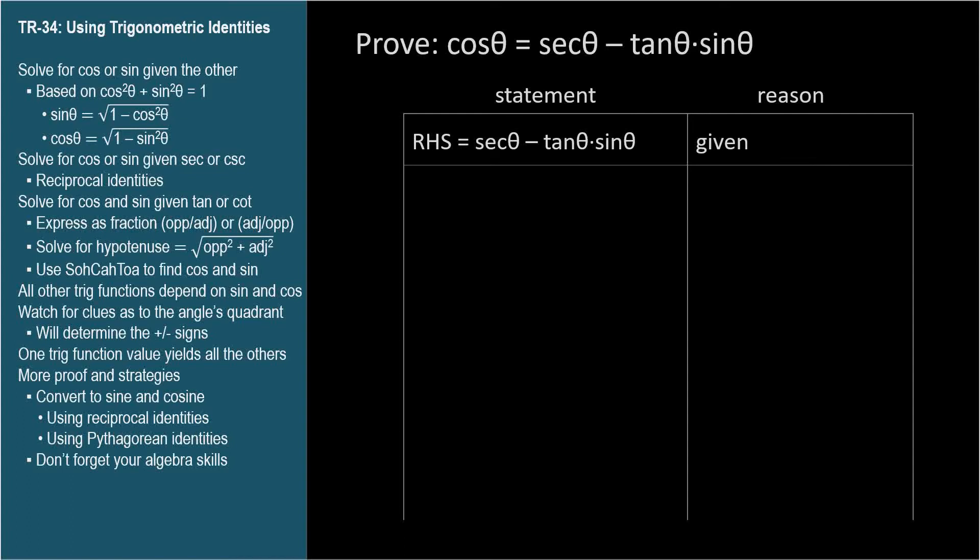Well, it's time for one of those tips I've been mentioning. It's often helpful to convert everything into sine and cosine. So let's start by getting rid of the secant term by substituting its reciprocal identity 1 over cosine. The reason can be identity of secant.